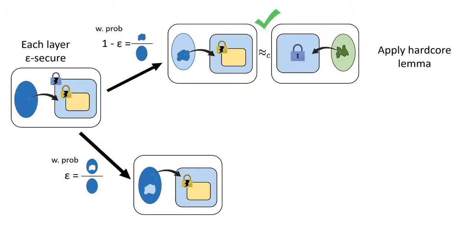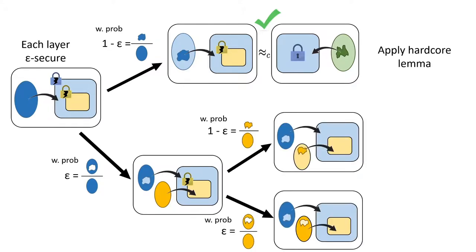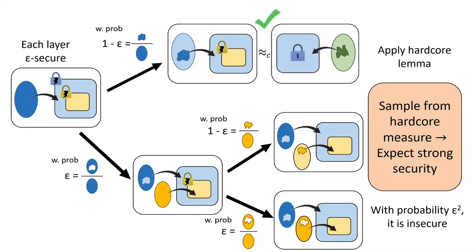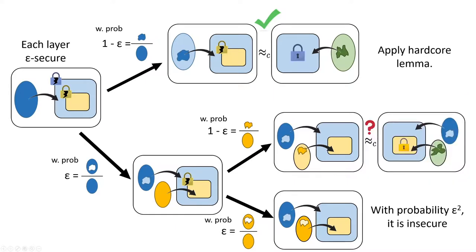Now consider the bottom case: since we do not sample from the hardcore of the blue encryption, we instead rely on the security of the yellow encryption. In the normal case, the yellow encryption is encrypted using uniform randomness, which is equivalent to sampling from the hardcore of the yellow encryption with probability one minus epsilon, and from the complement with probability epsilon. When we sample from neither hardcore measure, we give up and call it insecure — this happens with probability epsilon squared. In the middle case, when we sample from the hardcore of the yellow encryption, we expect strong security for the yellow encryption, so we should be able to replace the yellow encryption with an encryption of zero, which gives security because it completely wipes out information about message m.